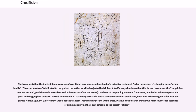The hypothesis that the ancient Roman custom of crucifixion may have developed out of a primitive custom of hanging on an inauspicious tree dedicated to the gods of the netherworld is rejected by William A. Old Father, who shows that this form of execution — the supplicium more maiorum, punishment in accordance with the custom of our ancestors — consisted of suspending someone from a tree and flogging him to death. Plautus and Plutarch are the two main sources for accounts of criminals carrying their own patibula to the upright stipes.